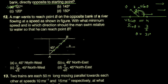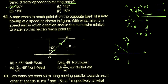پہلا option: اگر u velocity 45 degree north west ہو۔ North west direction میں u ہے اور river کی velocity اس طرف u ہے۔ Components break کریں: u/√2 اور u/√2۔ Net velocity x-direction میں u − u/√2 اور y-direction میں u/√2۔ یہ دونوں برابر نہیں ہیں، تو ان کا resultant 45 degree پہ نہیں نکلے گا — یہ answer نہیں بنے گا۔